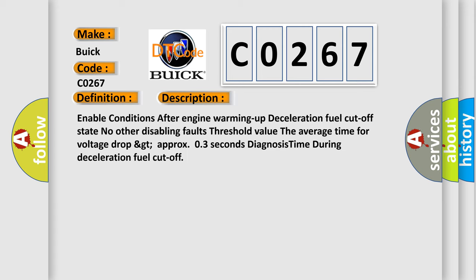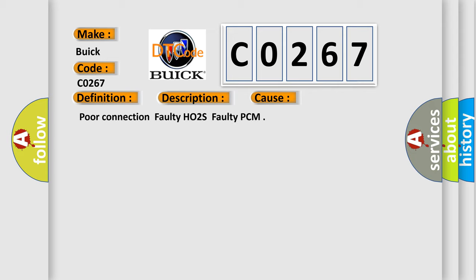Enable conditions: after engine warming up, deceleration fuel cutoff state, no other disabling faults. Threshold value: the average time for voltage drop greater than approximately 0.3 seconds. Diagnosis time during deceleration fuel cutoff. This diagnostic error occurs most often in these cases: poor connection, faulty HO2S, faulty PCM.